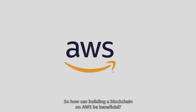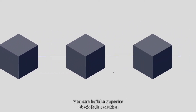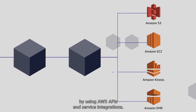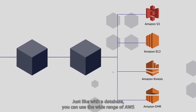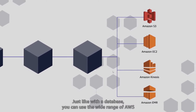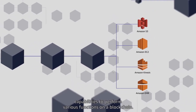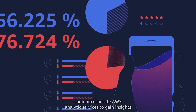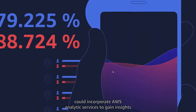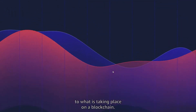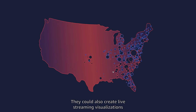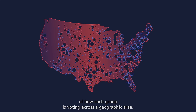So how can building a blockchain on AWS be beneficial? You can build a superior blockchain solution by using AWS APIs and service integrations. Just like with a database, you can use the wide range of AWS capabilities to perform various functions on a blockchain. For example, technically savvy voters could incorporate AWS analytics services to gain insights into what is taking place on a blockchain, and could also create live streaming visualizations of how each group is voting across a geographic area.